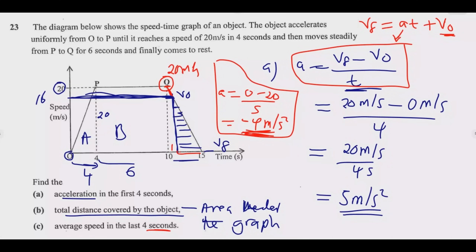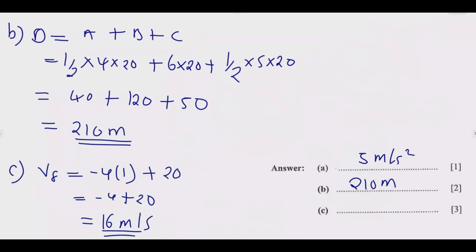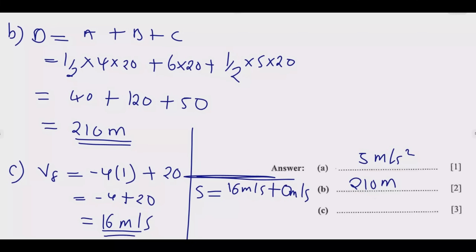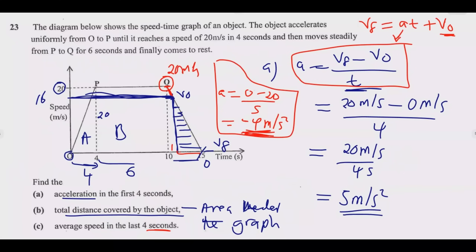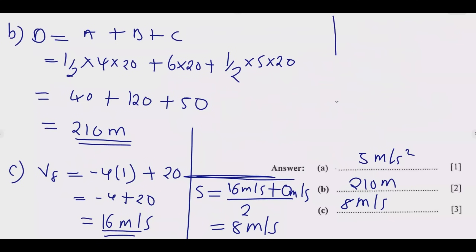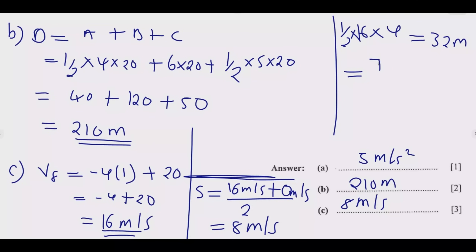Once we find that velocity of 16 meters per second, it becomes easier. The simplest way is to find the average between 16 and 0: 16 plus 0 divided by 2 equals 8 meters per second. Alternatively, find the area under the shaded region: half times 16 times 4 equals 32 meters, then divide by 4 seconds to get 8 meters per second — the same answer. So the average speed in the last four seconds is 8 meters per second, giving you the full six marks.